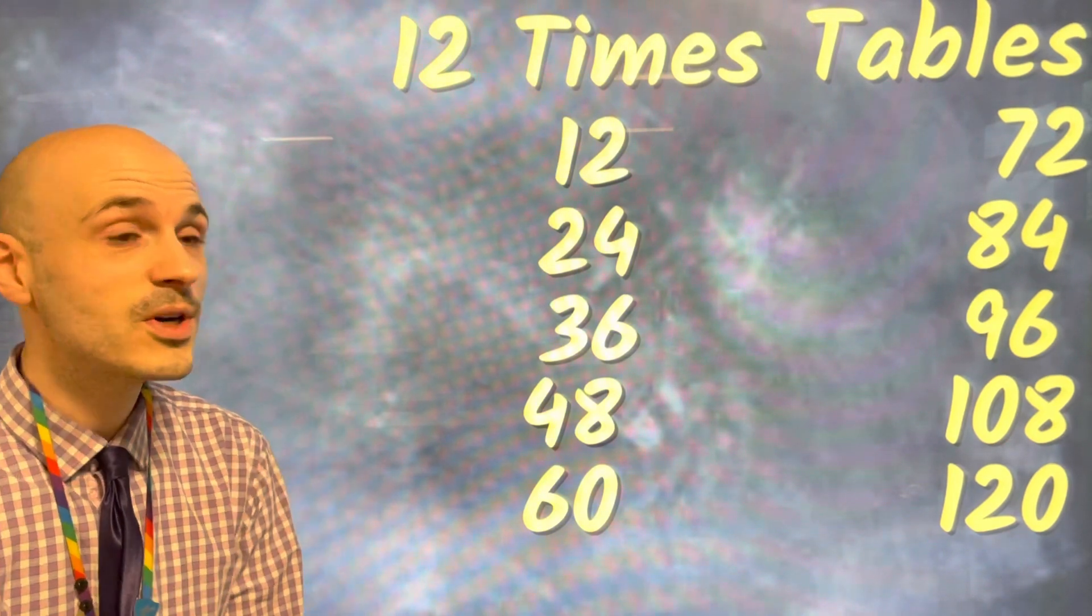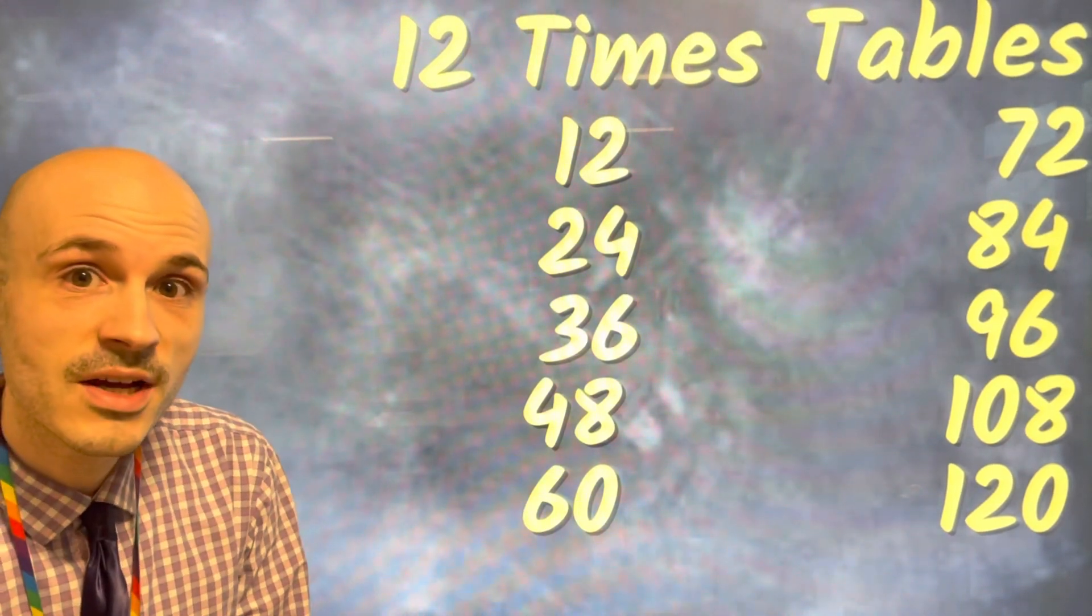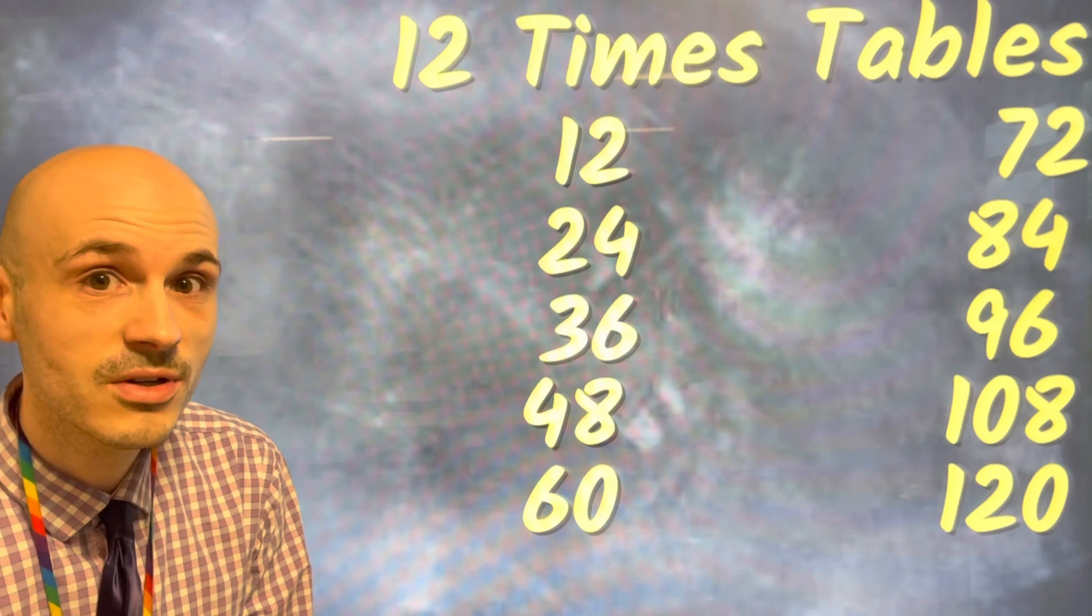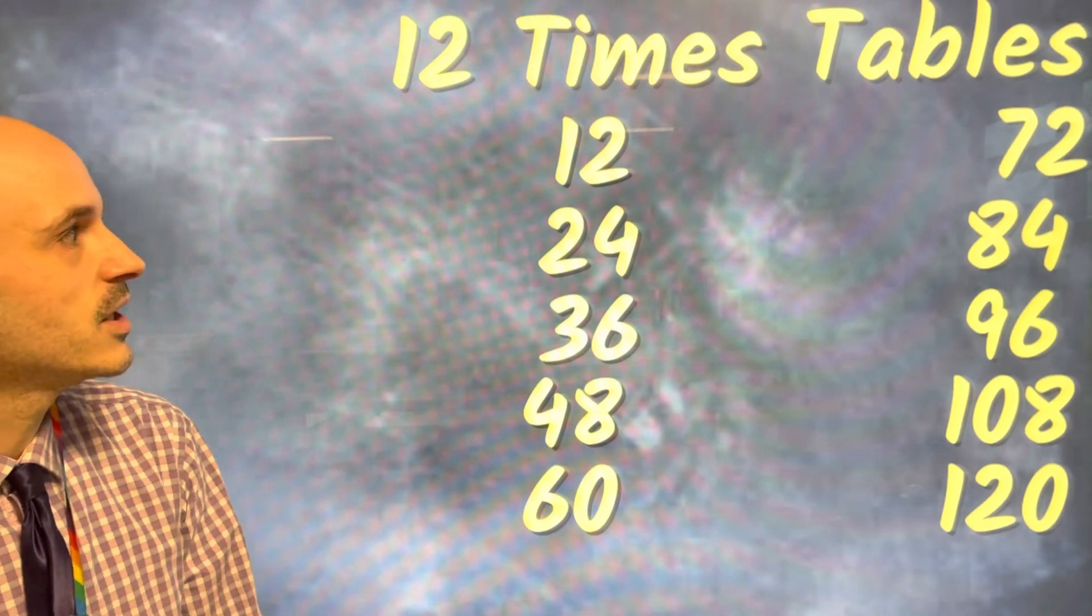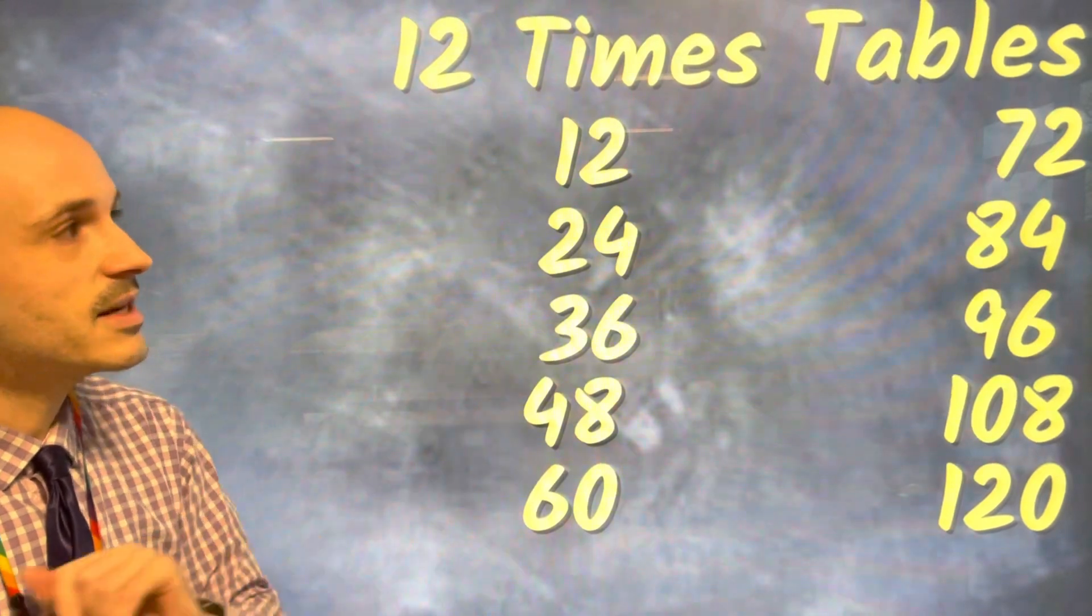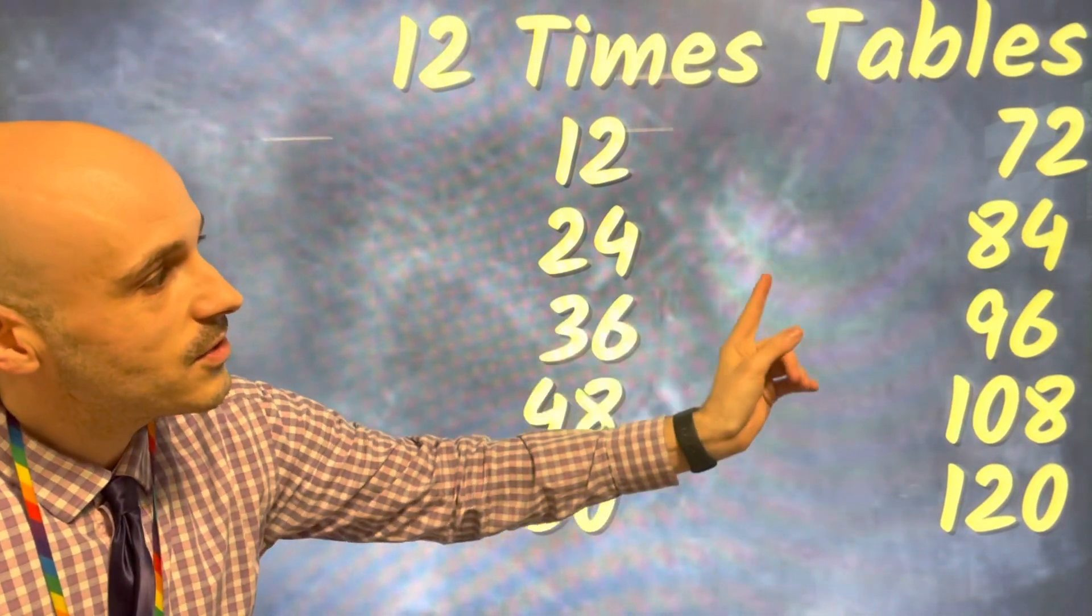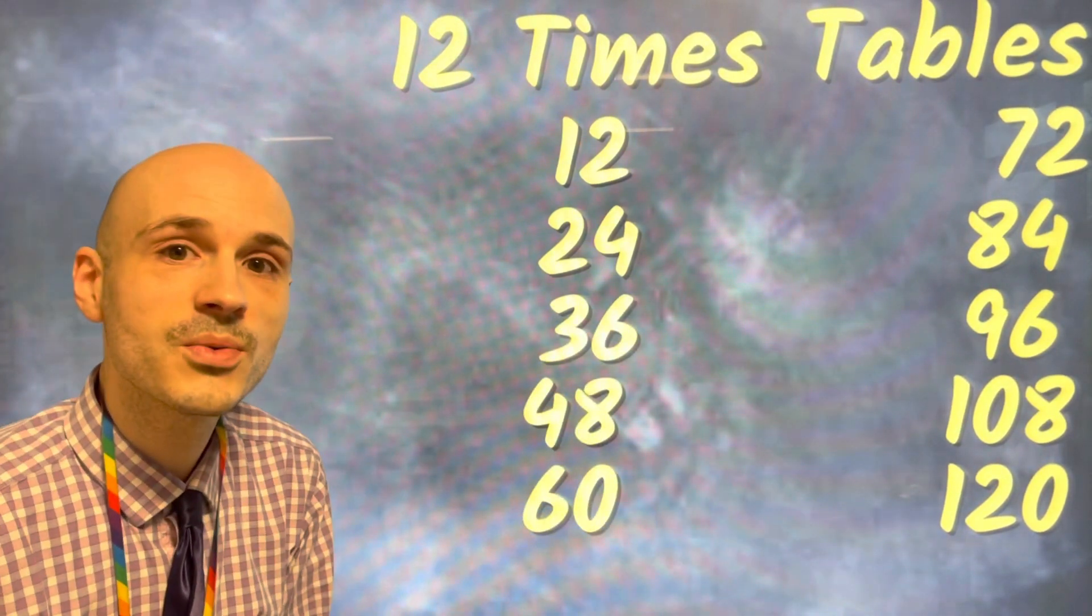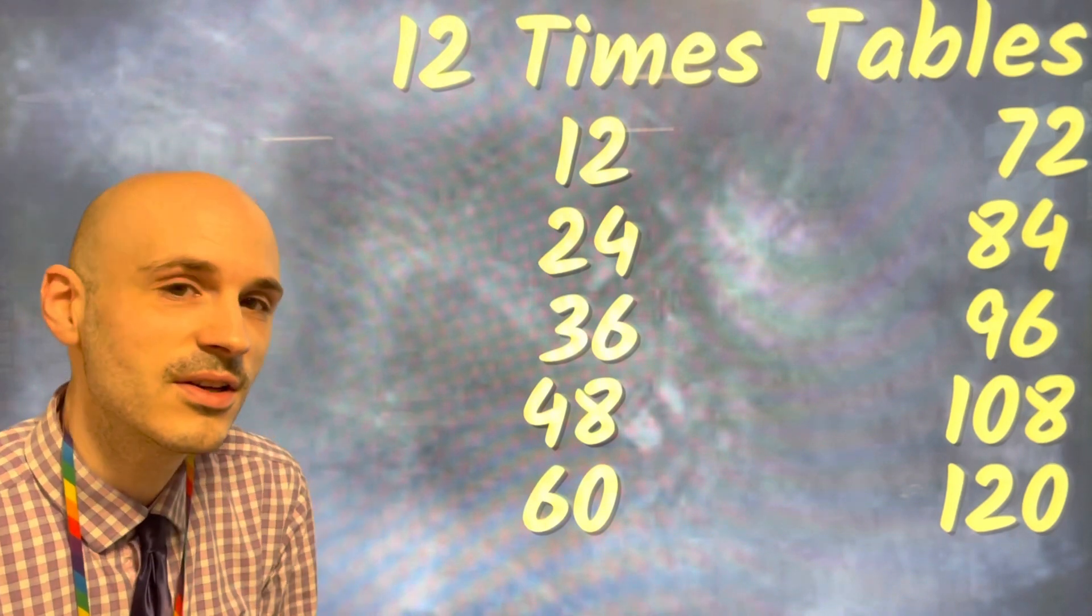Okay guys, so here we have our 12 times table all ready to go and this one is to the grand old Duke of York. So let's give it a go. 12, 24, 36, 48 and 60, 72, 84, 96, 108 and 120.